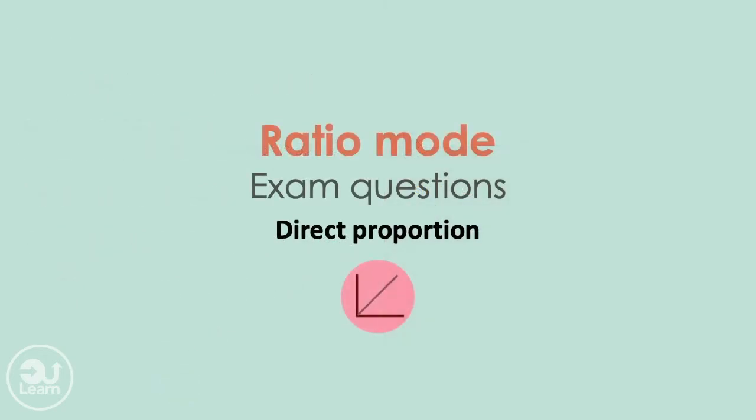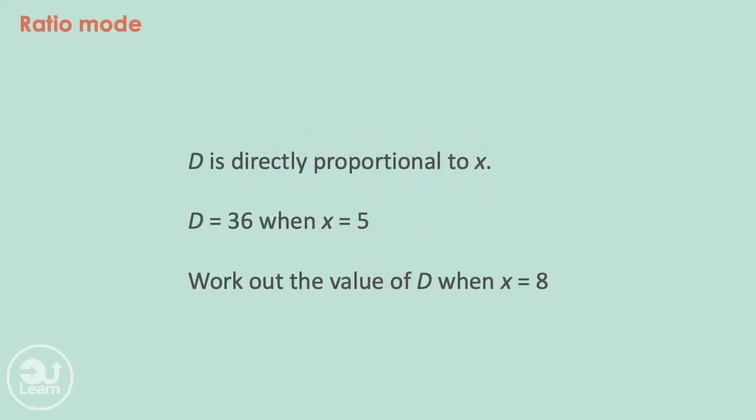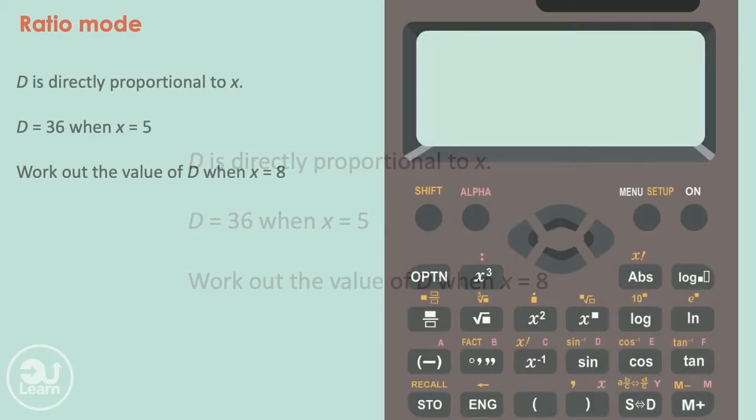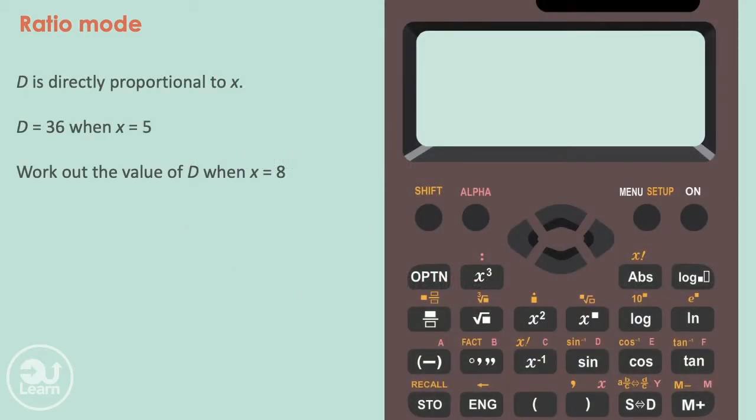We can also use this mode for direct proportion. Looking at this question, D is directly proportional to X. D equals to 36 when X equals to 5. Work out the value of D when X equals to 8. Let's put our information into ratios. Since D is directly proportional to X, we can represent the relationship as D to X. So our first ratio is 36 to 5, which is equivalent to our unknown D value to 8.